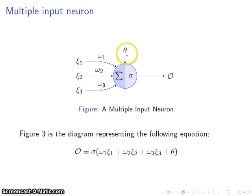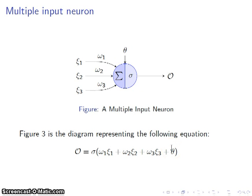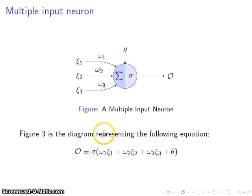And again, we have our theta, our bias term. Once all of those are multiplied together and added up, we're going to plug them into our transfer function, which in our case is the sigmoid, which gives us our output. Script O is given as this equation right here.